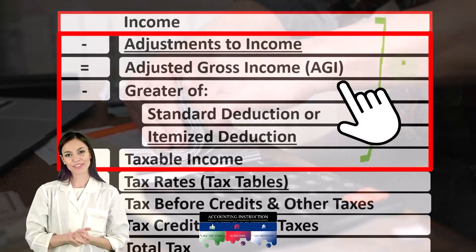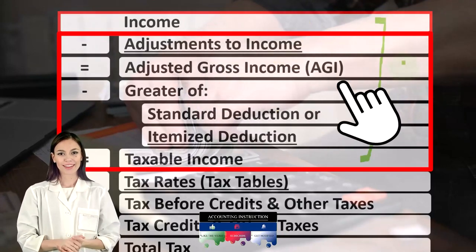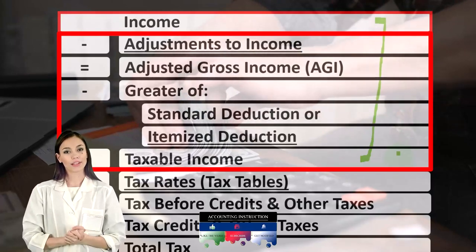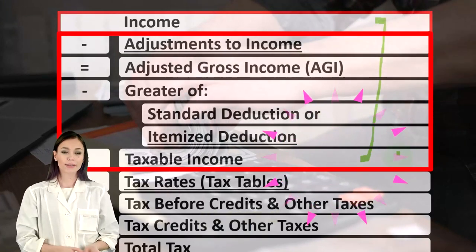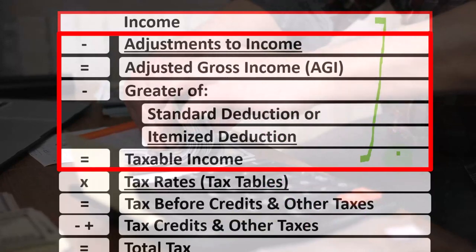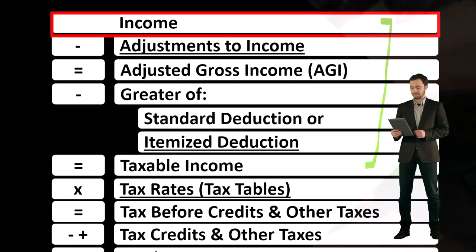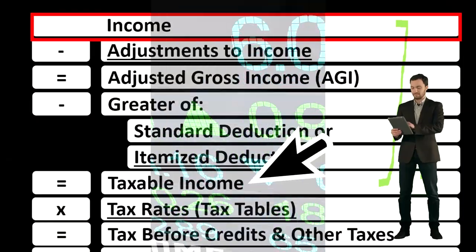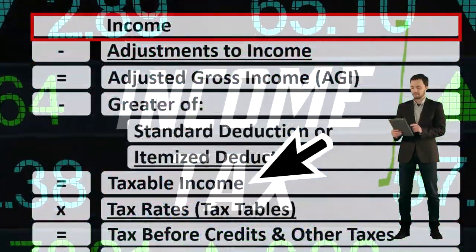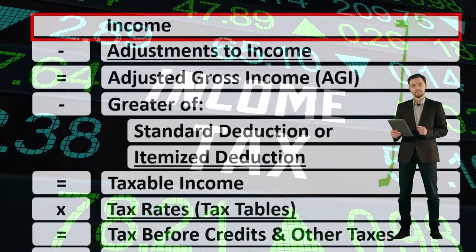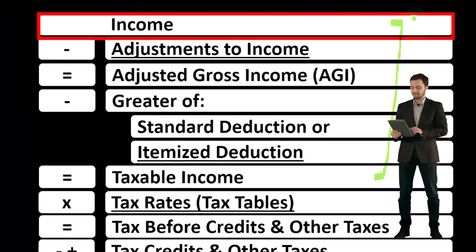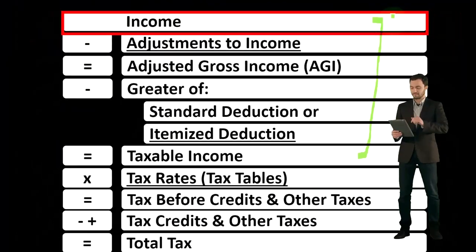Income is up top, with the equivalent of expenses being the deductions, to arrive at the equivalent of net income — that being taxable income. Our objective is flipped on its head: we want taxable income as low as possible, as opposed to normally wanting net income as high as possible. So when talking about the income line up top, the question is: is this something that is income?